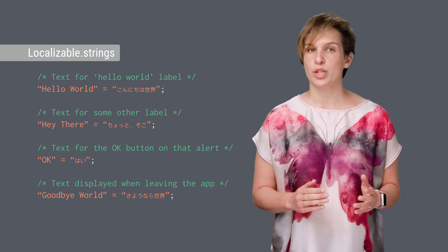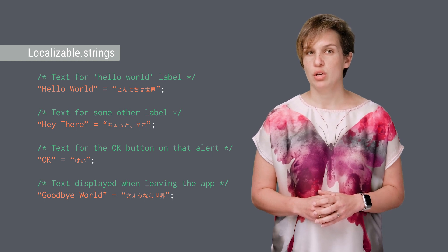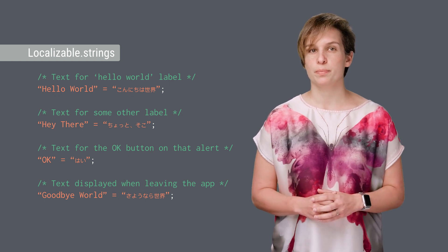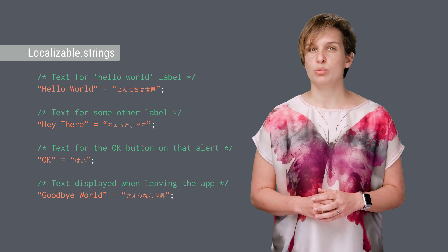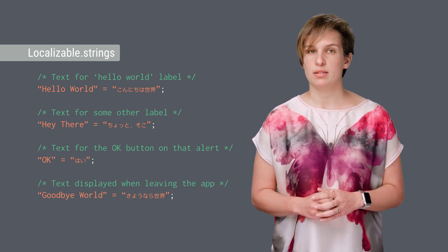If you want to support multiple languages — which you're very encouraged to do — you need one file for each supported language. All localization files should be named localizable.strings. The way we can tell them apart is by the folder they'll be placed in. For English, the folder name will be en.lproj; for Spanish, es.lproj; and for Chinese, zh.lproj. The folder name should be the two-letter representation of the language you want to support, followed by .lproj.